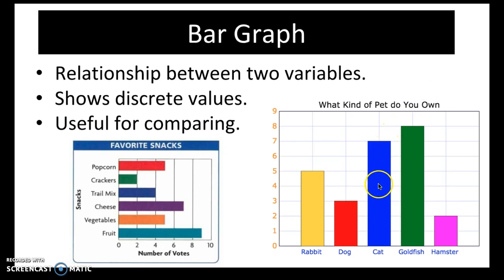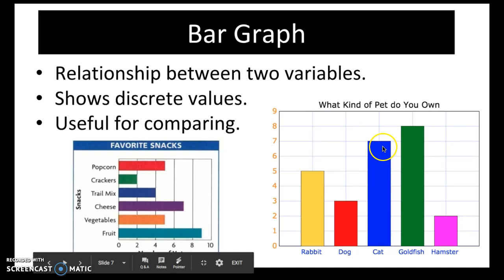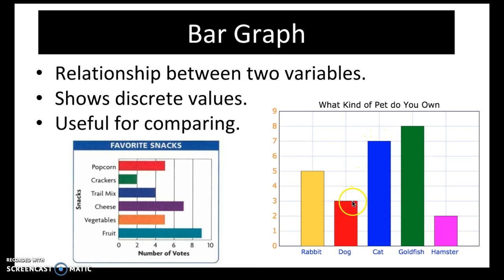Right, so more people own cats than dogs and we know that because the bar here for cats is higher than that for dogs. We can also utilize the values: seven people own cats and only three people own dogs. So by comparison, we can answer that question.